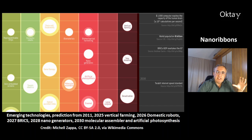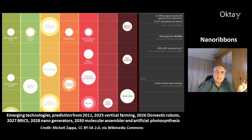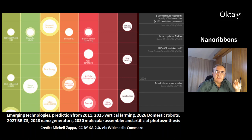This is a nice overview — part of a larger diagram of emerging technologies, a prediction from 2011. It predicted vertical farming for 2025, domestic robots for 2026, and the BRICS overtaking G7 countries in 2027 — which has already happened. Nanogenerators and molecular assemblers could come in 2028, and artificial photosynthesis in 2030. In most cases these predictions are behind reality because they underestimate increasing computing power, new materials, and price declines in some materials.